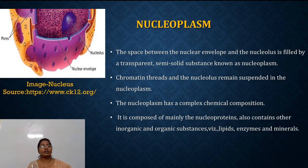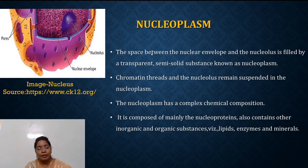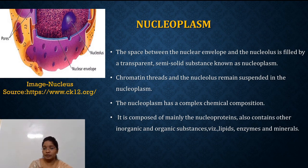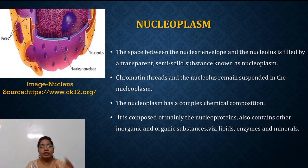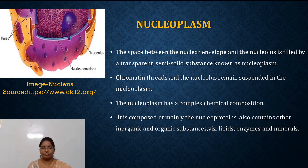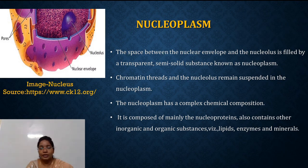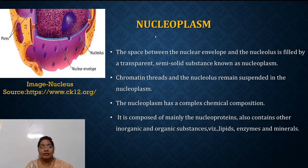The second important component is nucleoplasm. The space present between nuclear membrane and nucleolus is filled by a transparent semi-solid substance called nucleoplasm. In the nucleoplasm, the chromatin material and nucleolus remain suspended. The nucleoplasm has a very complex chemical composition — it is composed mainly of nucleoproteins, and also contains other inorganic and organic substances like lipids, enzymes, and minerals.